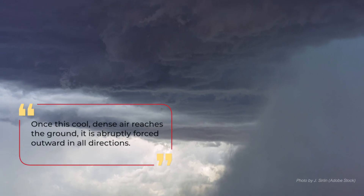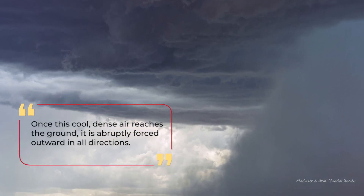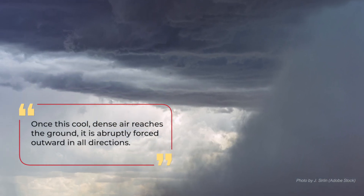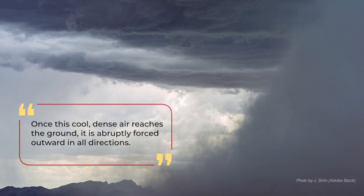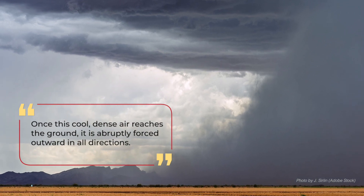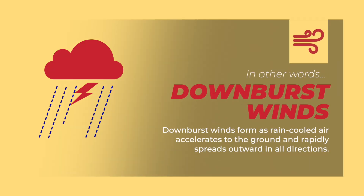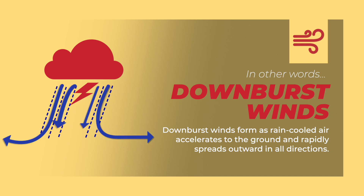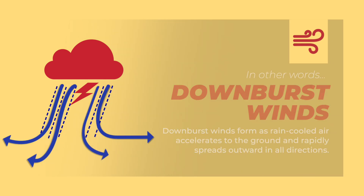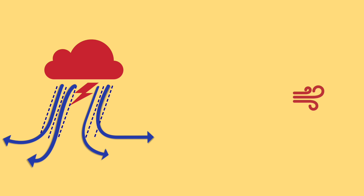Once this cool, dense air reaches the ground, it is abruptly forced outward in all directions. In other words, downburst winds form as rain-cooled air accelerates to the ground and rapidly spreads outward in all directions.